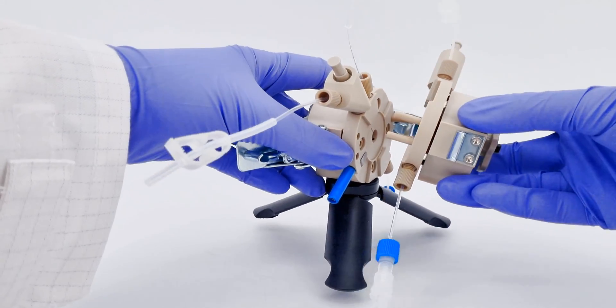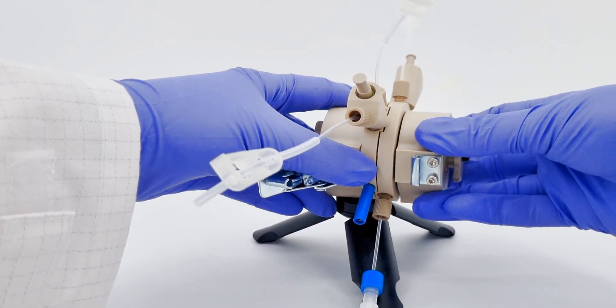Reunite the two halves of the cell, ensuring correct alignment and subsequently clamp them together.